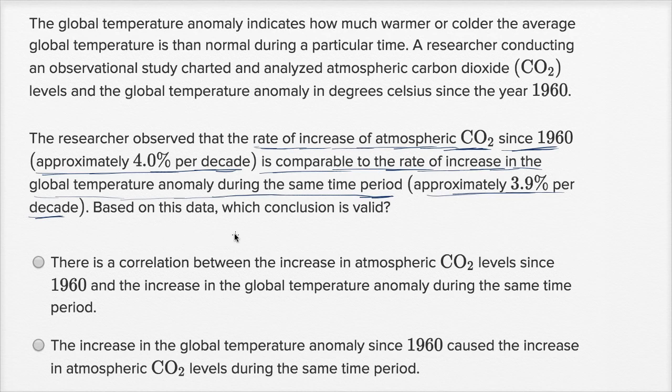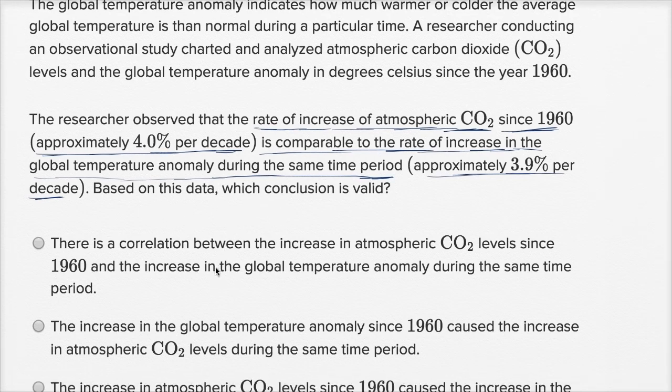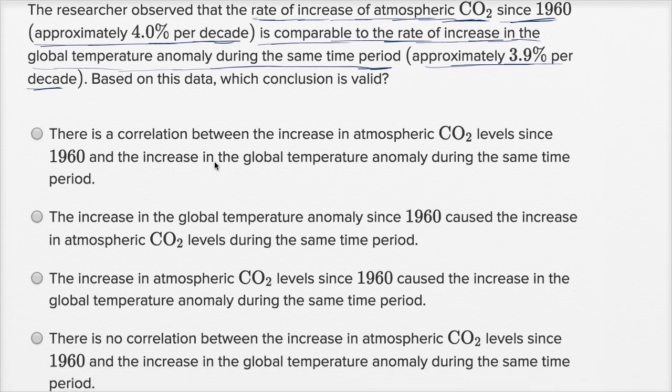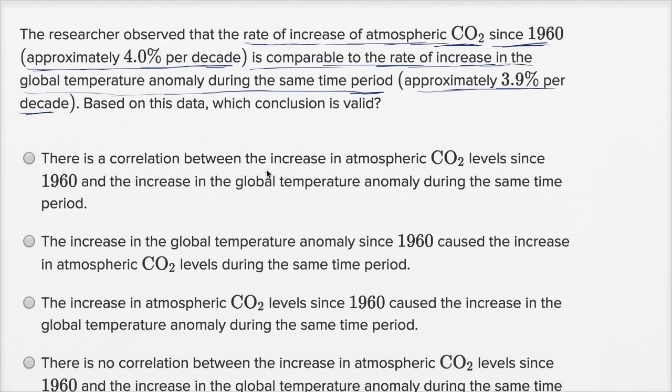Based on this data, which conclusion is valid? Let's see. There is a correlation between the increase in atmospheric CO2 levels since 1960 and the increase in the global temperature anomaly during the same time period. That one seems pretty valid. These are both moving in the same direction together.